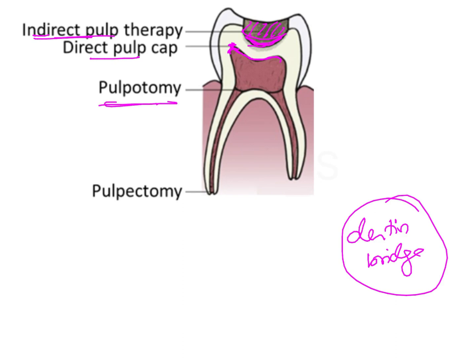In pulpotomy, we remove the coronal portion of the pulp which has been infected. When you open up the pulp cavity, you see hemorrhage taking place, indicating the pulp tissue is infected and inflamed. However, the radicular portion may still be intact, vital, and non-infected. In those situations, we only remove the infected coronal pulp and maintain the radicular pulp so that root formation will continue — that is pulpotomy.